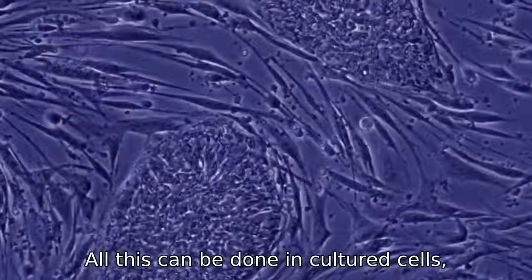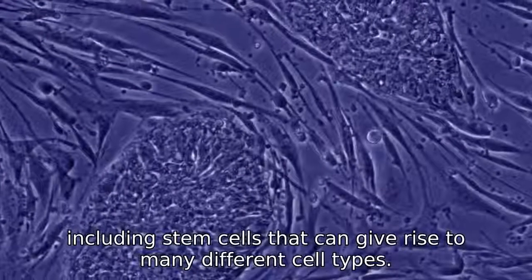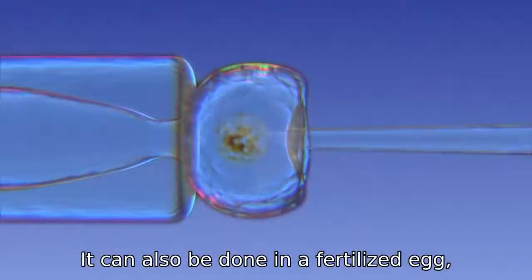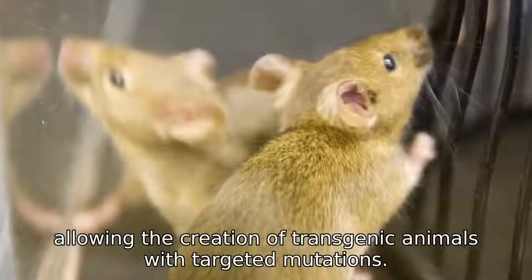All this can be done in cultured cells, including stem cells that can give rise to many different cell types. It can also be done in a fertilized egg, allowing the creation of transgenic animals with targeted mutations.